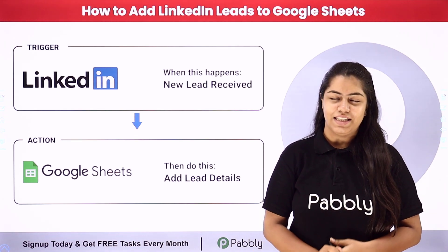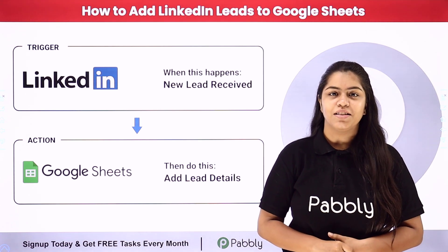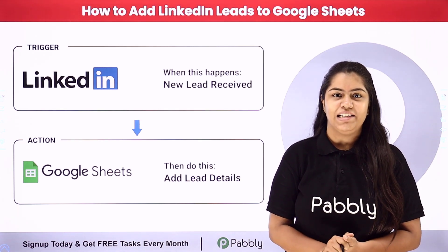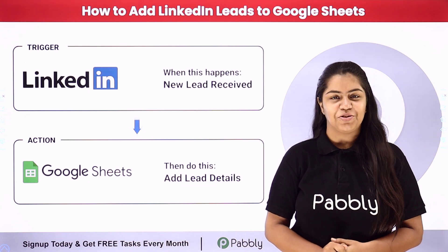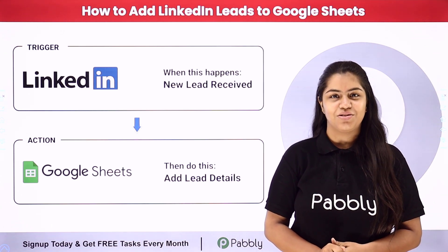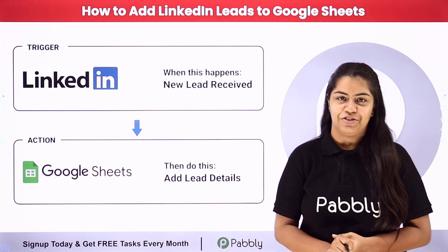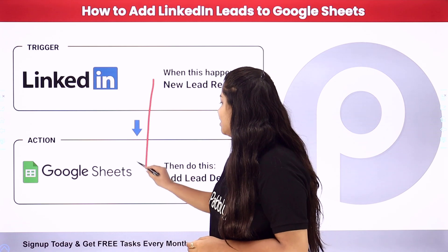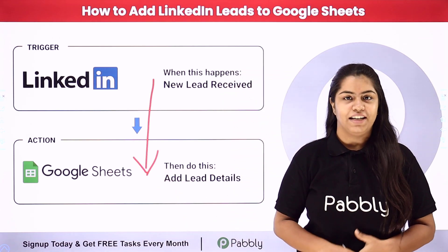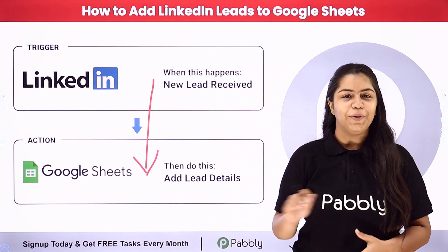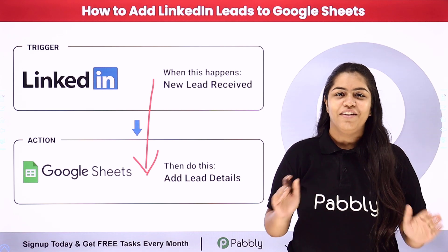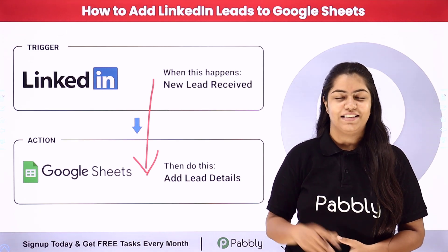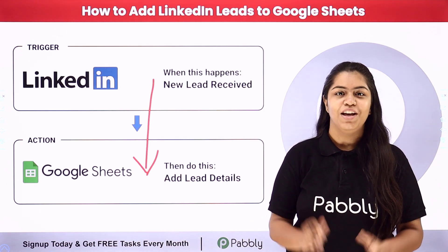I am doing the same and I wish that as soon as a new LinkedIn lead is received, automatically the details of that lead should be added to my Google Sheets too. For this we are going to create a connection between LinkedIn lead ads and Google Sheets, using Pably Connect — an amazing automation software — without knowing any programming or coding language.